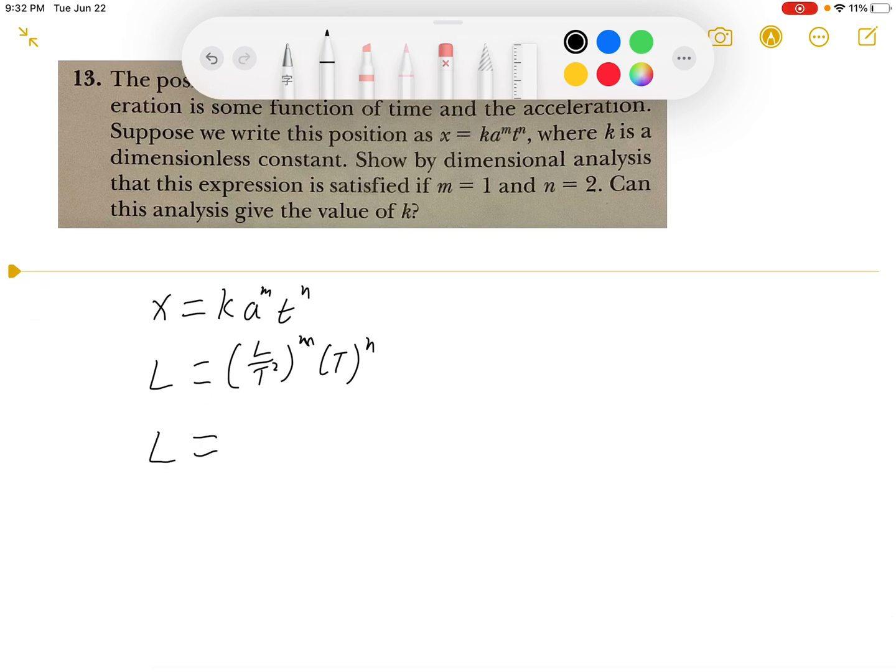we'll have L equals L to the m power times T to the n minus 2m power. So substituting m equals 1 and n equals 2,